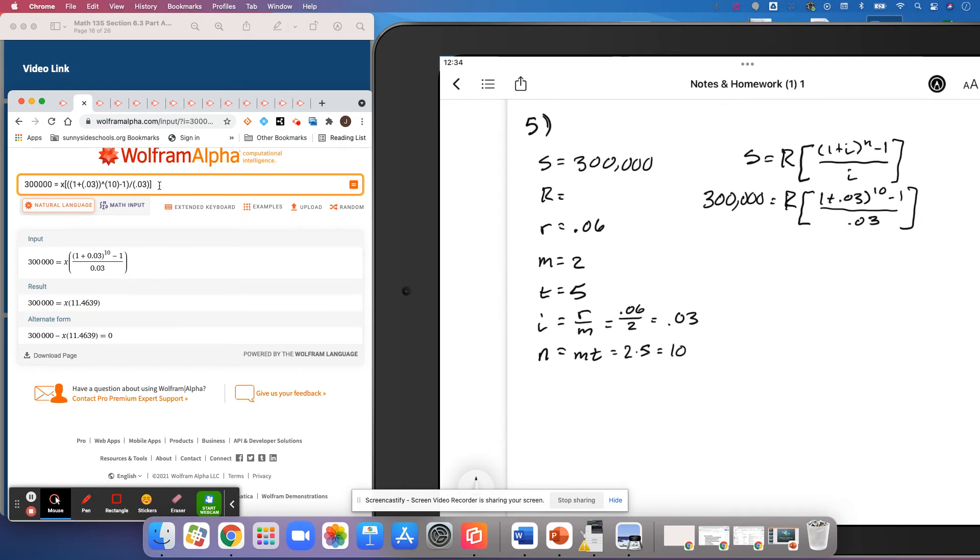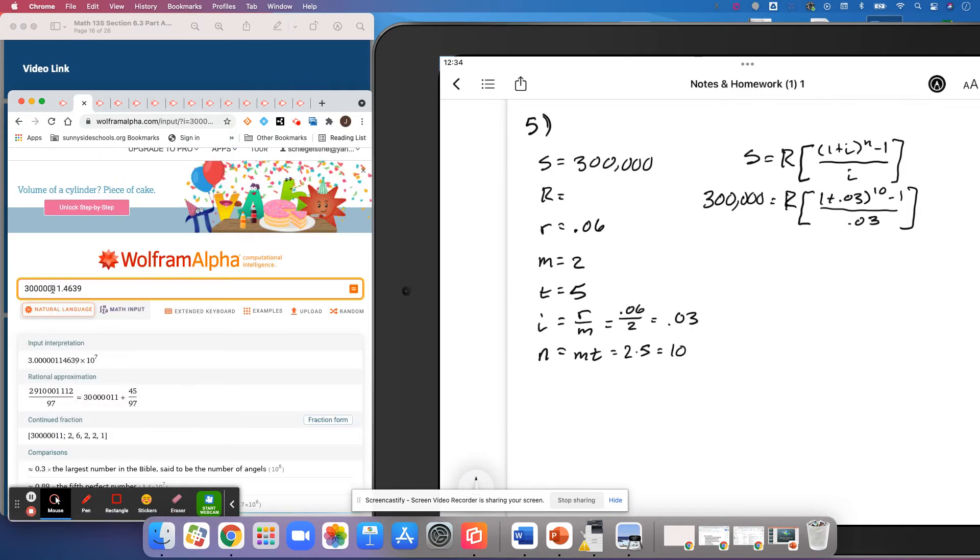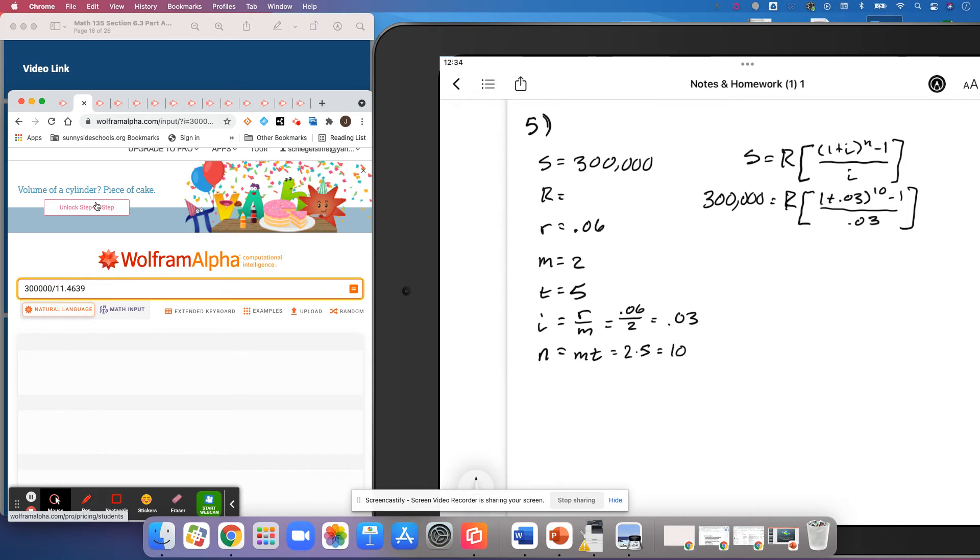So as I mentioned earlier, Wolfram is not going to finish solving this for me, so I need to take that $300,000 and divide it by 11.4639. And I didn't put the division bar. Oh well. There we go.